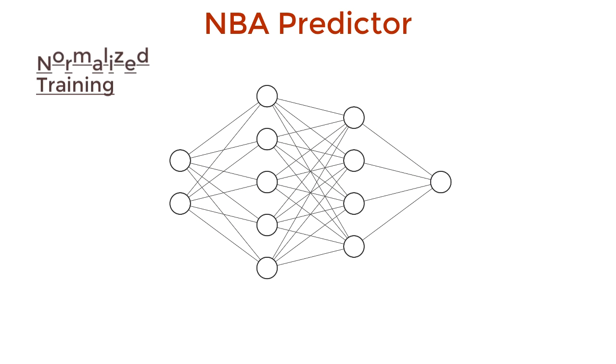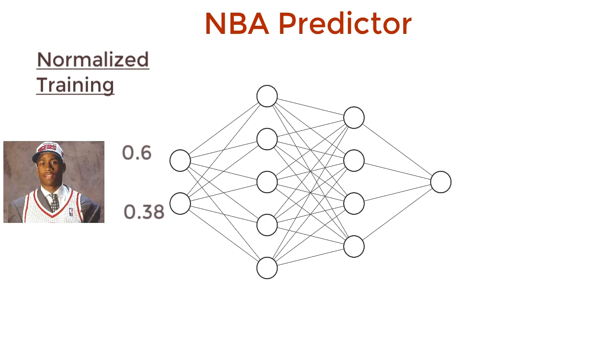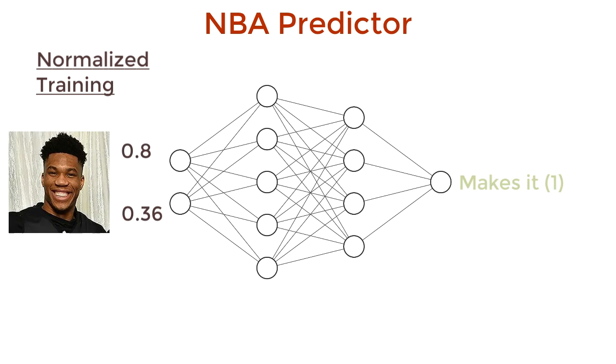Let's normalize our input data. This makes sure that the age and height are between the same small fixed range. And let's see what happens. Allen Iverson makes it. I get it.